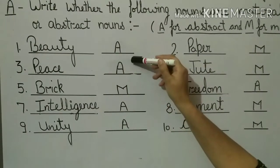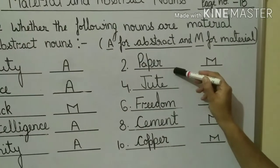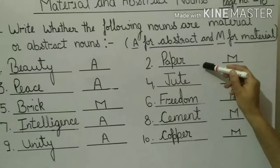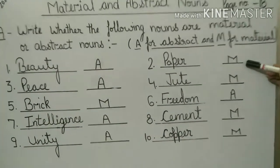So beauty is abstract noun. Another example is paper. Paper is a material by which we can make things. We can see it, we can touch it. So it is material noun.